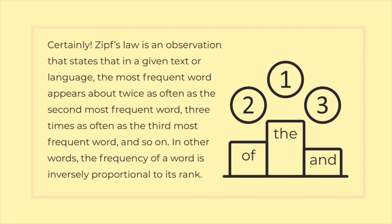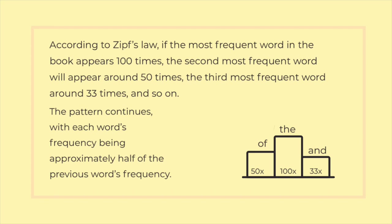According to Ziff's Law, if the most frequent word in the book appears 100 times, the second most frequent word will appear around 50 times, the third most frequent word around 33 times, and so on. The pattern continues, with each word's frequency being approximately half of the previous word's frequency.